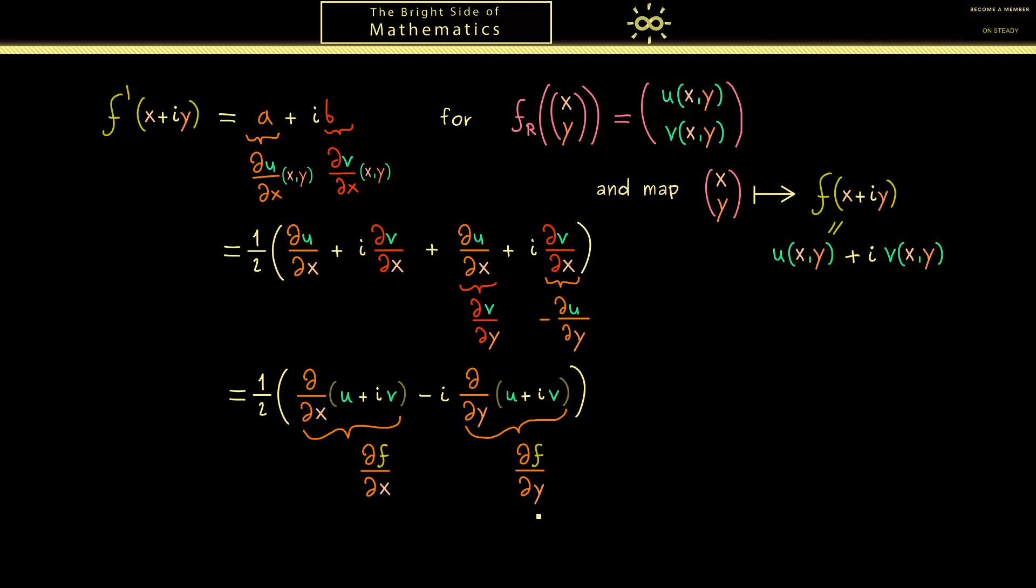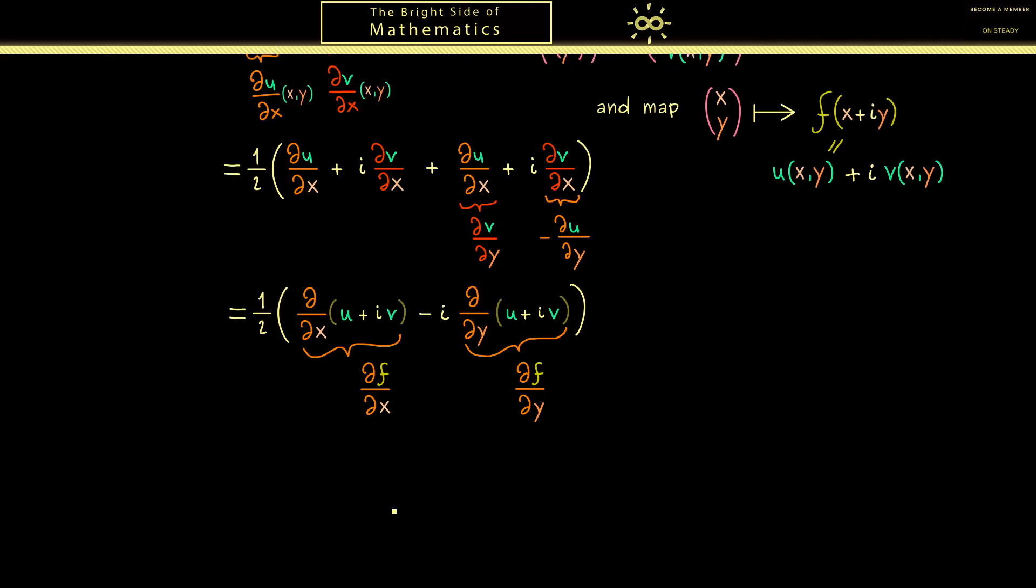However first I want to define the Wirtinger derivatives. Because with this calculation here we already know how to do this. We can just use combinations of the partial derivatives with respect to x and y. Firstly now when we write ∂/∂z, this should stand for 1/2 times (∂/∂x minus i ∂/∂y). So you see this is exactly what we have learned above. The definition makes sense and for a holomorphic function f it gives us the complex derivative of f.